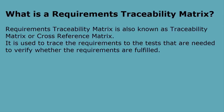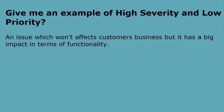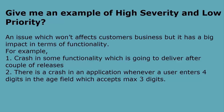What is a requirement traceability matrix? Requirement traceability matrix, also known as traceability matrix or cross reference matrix, is used to trace the requirements to the tests needed to verify whether the requirements are fulfilled. Give me an example of high severity and low priority: an issue which won't affect the customer's business but has a big impact in terms of functionality — for example, a crash in some functionality which is going to be delivered after a couple of releases. Specifically, there is a crash in an application whenever a user enters 4 digits in the age field which accepts a maximum of 3 digits.